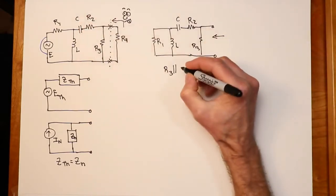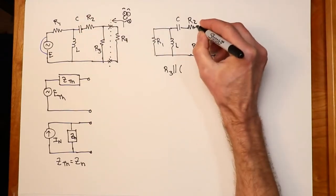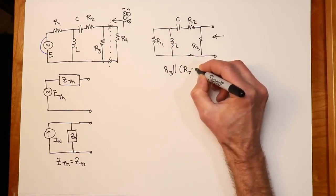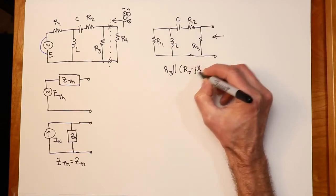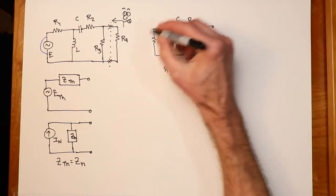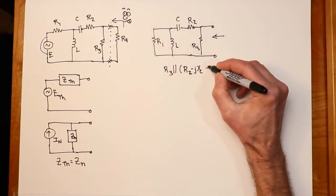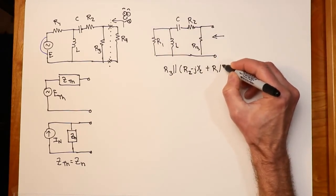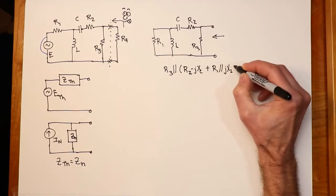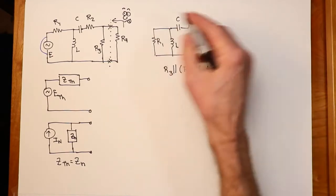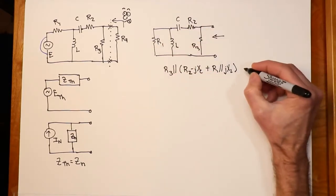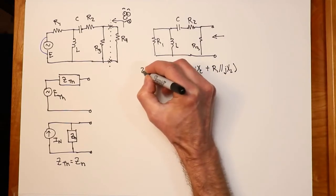Well, it's R3 in parallel with this whole thing. Well, what is that whole thing? That would be R2 and the X sub C in series. And then that combination would be in series with the parallel combination of R1 and X sub L. So we would put the appropriate values in there, and grind this out, and we'd come up with a certain value, and that is Z-Thevenin.